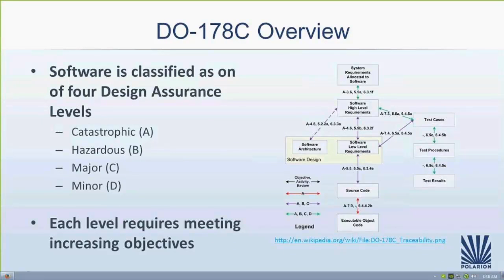Starting with the overview of DO-178, one of the first things done is classifying the software on one of four design assurance levels: catastrophic, hazardous, major, and minor. Catastrophic would be something like flight control software — if that software stops working, it could cause a major loss of life or loss of aircraft. Hazardous might be autopilot software. Minor may be something like entertainment software where a failure causes discomfort for passengers but no effect to the plane.